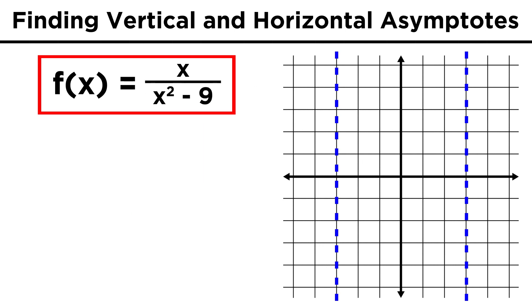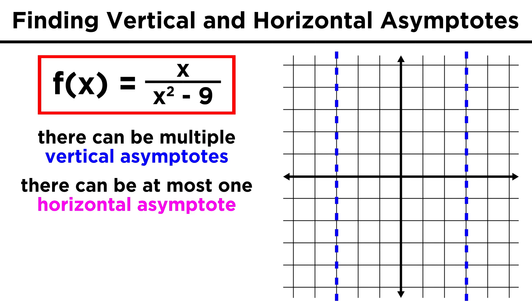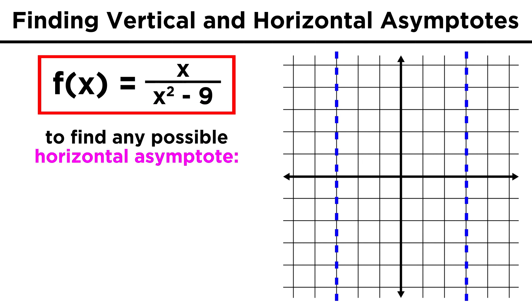We can also find out if there is a horizontal asymptote. We should note that while there can be multiple vertical asymptotes, there can only be one horizontal asymptote at most, so it's either one or none. To find out which,